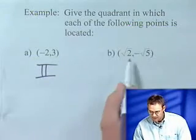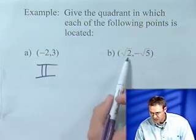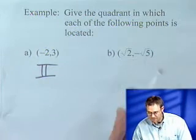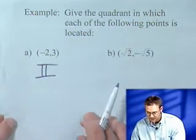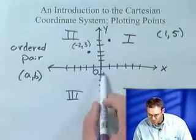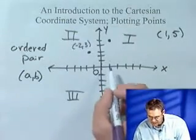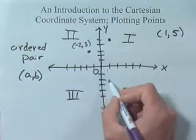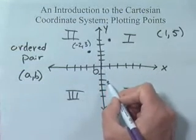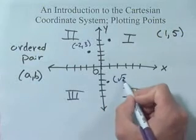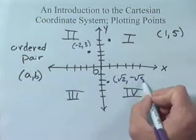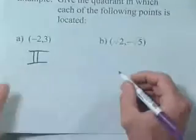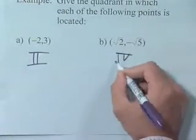Here's another point: square root of two is the x coordinate, negative square root of five is the y coordinate. Again we need to go over the square root of two, maybe that's about right here somewhere, and we need to go down the square root of five, so down here somewhere: (√2, -√5). So that point would be located in quadrant IV.